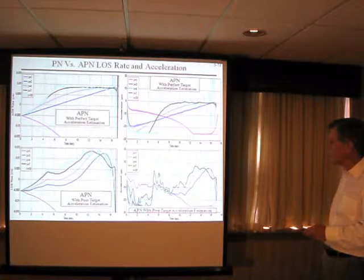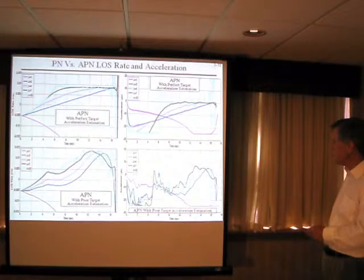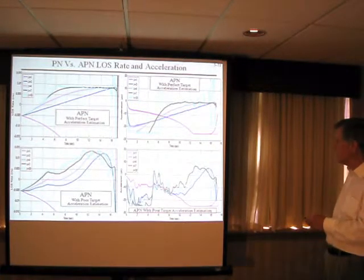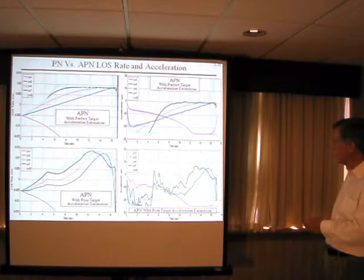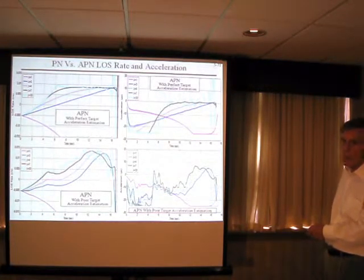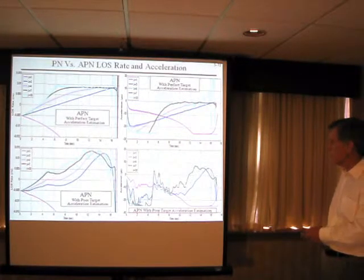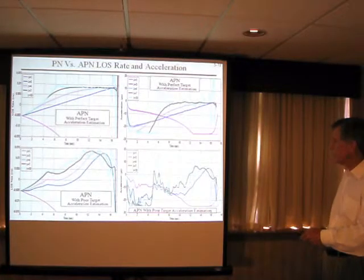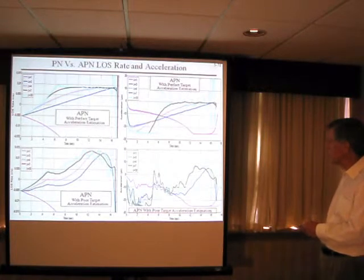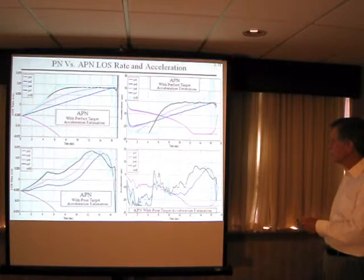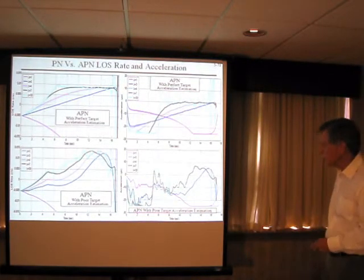For lambda equals 3 and 4, we call for more and more acceleration early so we need less late. For lambda equals 3, the error in the target acceleration caused us to overshoot and we never quite got back to the target. For lambda equals 4 and 7, we called for acceleration early and didn't need as much late, so we achieved an intercept. Finally, for lambda equals 30, we get a very pronounced instability which leads to a missed distance.